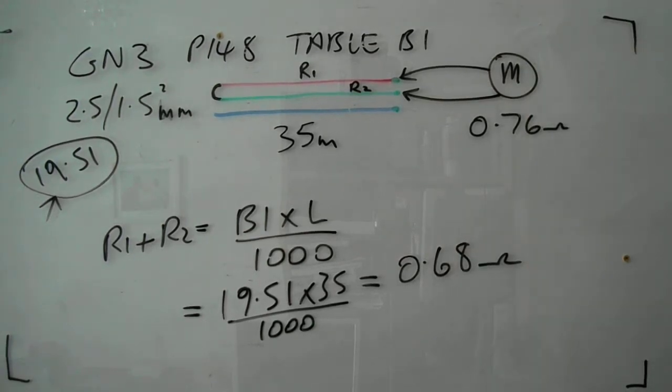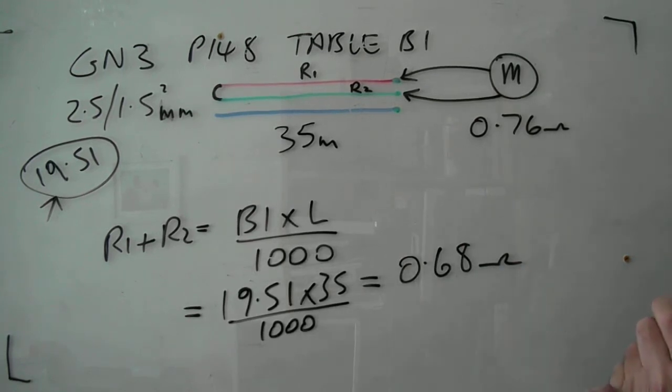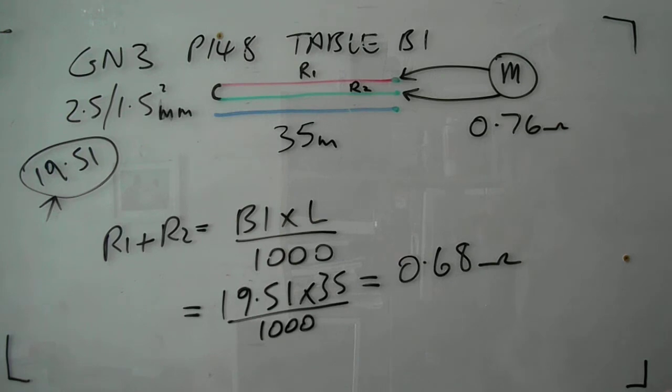So you can see there, this is the sort of figure you're expecting and this is the figure you're measuring. So you've got to make a decision as to whether that's acceptable or not. I would say it's probably a little bit suspect. I would check all the connections in that line to make sure they were OK to see if you can get it down to a bit more of what you expect.